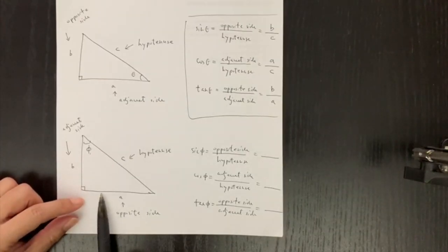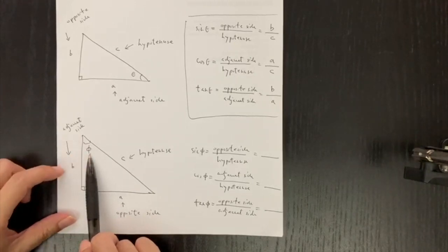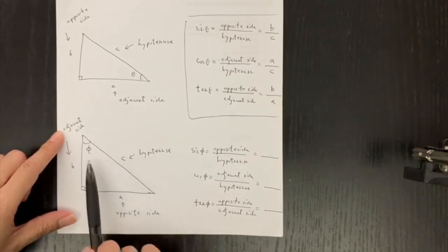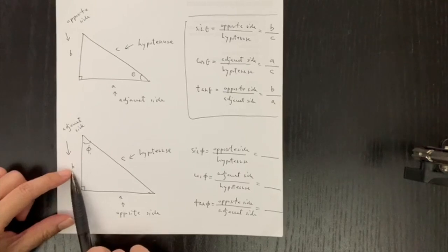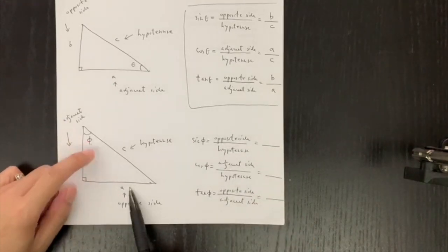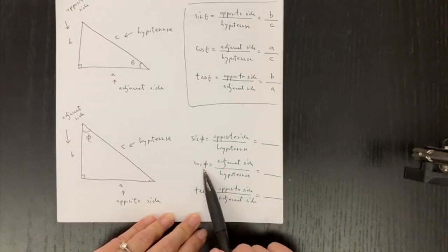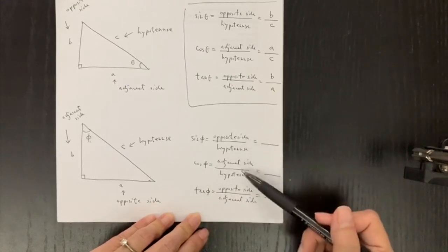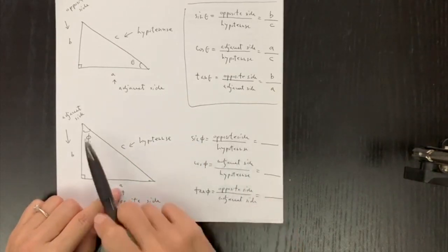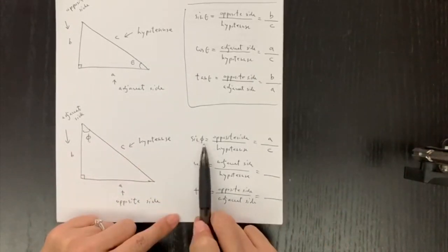I have another right-angled triangle, same as before. But this time, I change the angle to here, and this is phi. C is always the longer side — we call that hypotenuse. The side next to this angle is B, so we call B the adjacent side, and A will be the opposite side to this angle. So sine phi is equal to opposite over hypotenuse, which is A over C.